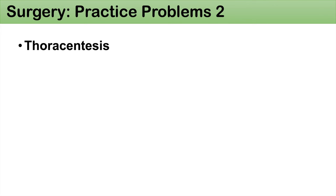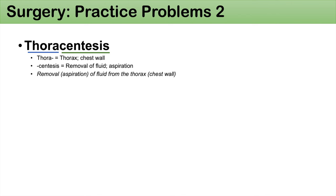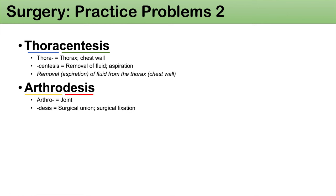The next practice problem is thoracentesis. Thora means the thorax or the chest wall, and -centesis means removal of fluid or aspiration. So thoracentesis means removal or aspiration of fluid from the thorax. The next word is arthrodesis: arthro means joint, and -desis means surgical union or fixation — so arthrodesis is a surgical union of a joint.